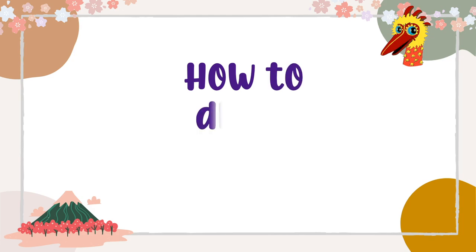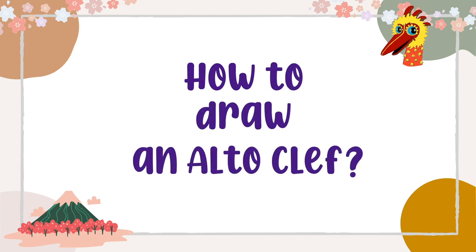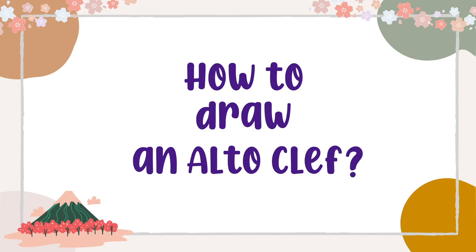The student asks how to draw an alto clef. Let's get right to it! On a music stave, start on the very left corner. From line 5, draw two straight lines all the way down to line 1. From line 4, draw a backwards C and stop in space 3. Then connect the end of the backwards C to the inner straight line with a short dash and meet on line 3. Draw another dash in the opposite direction and stop in space 2. Then with another backwards C from the end of the dash, finish on line 1. And there you have it — an alto clef!